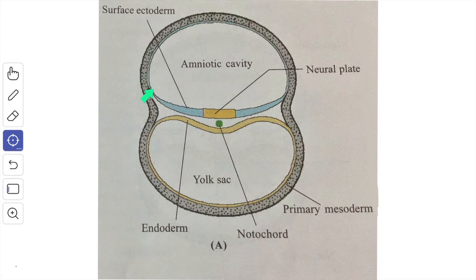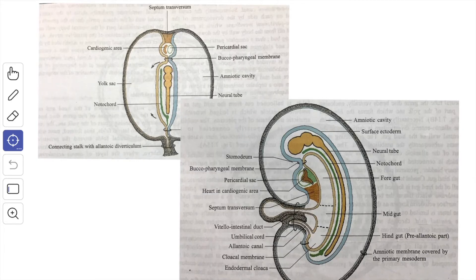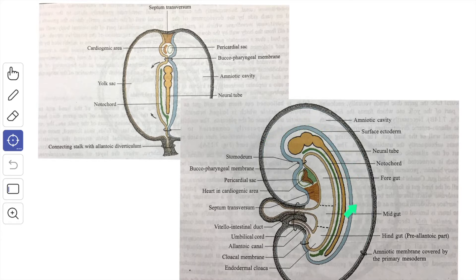The roof and the floor meet at the periphery of the disc, forming the amnio-ectodermal junction. With the extension of the extra-embryonic coelom, the outer surface of the amniotic cavity and the yolk sac are covered by a thin layer of primary mesoderm, which is continuous with the primary mesoderm of the chorion at the caudal end of the germ disc through the connecting stalk.